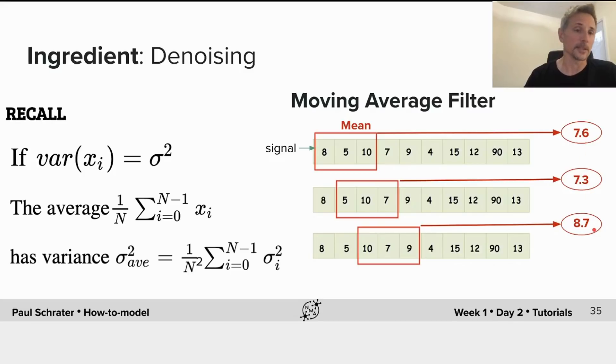The reason that they're less noisy has to do with the basic statistical properties of averages. If we have a series of random numbers which have a variance of σ², the average of these numbers will have a variance which is reduced by a factor of 1/N². So in our example on the right, this would be a reduction in variance of 1/9 for a window size of 3.